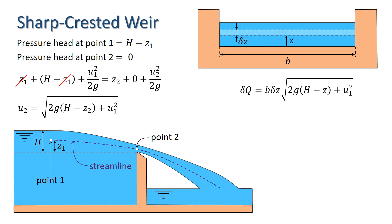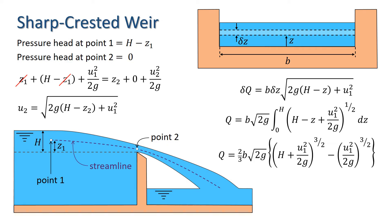We integrate this to find the discharge. Taking out the constants B and root 2G, we are integrating the square root of H minus Z plus U1 squared over 2G between 0 and H, giving us 2 thirds B times root 2G times H plus U1 squared over 2G to the power of 3 over 2 minus U1 squared over 2G to the power of 3 over 2.